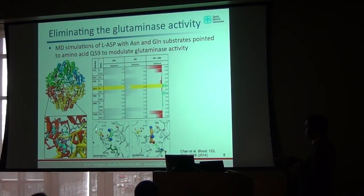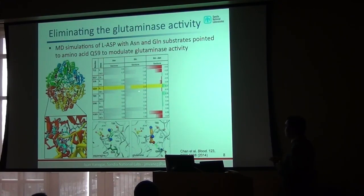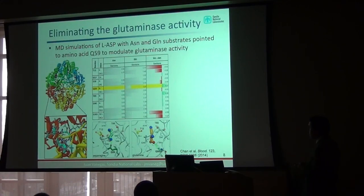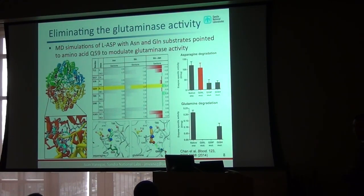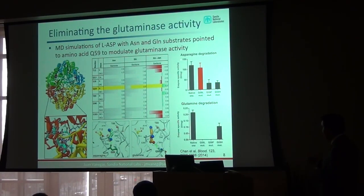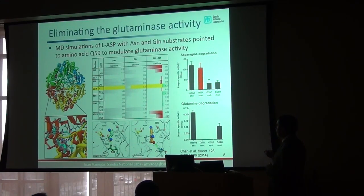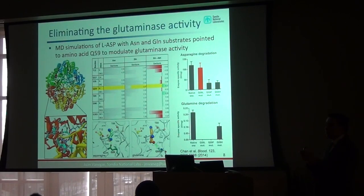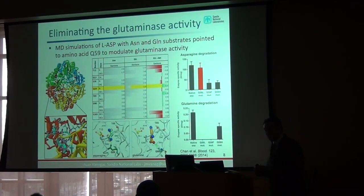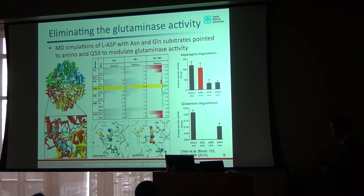We found a particular amino acid, glutamine-59, in the enzyme that contacts the glutamine substrate frequently but does not contact asparagine. Our colleagues at MD Anderson Cancer Center did a mutagenesis study, changing this amino acid through 19 different options, and found one mutation — substituting this amino acid for a different one — that maintained the asparaginase activity while completely eliminating the glutaminase activity. This shows the power of using simulations to guide experiments.